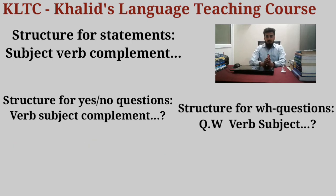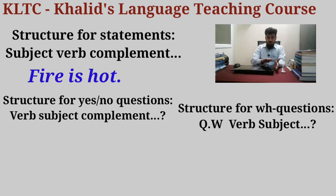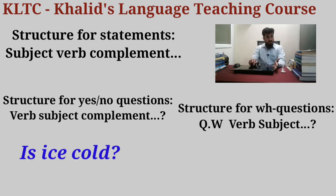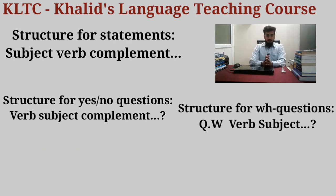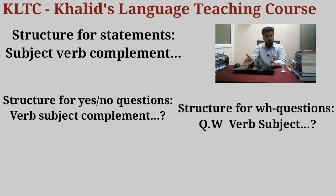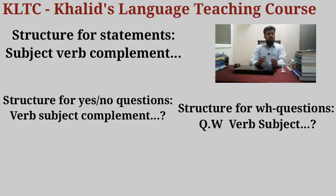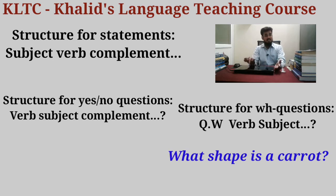More examples: 'Fire is hot.' Yes or no: 'Is fire hot?' 'Ice is cold.' Yes or no: 'Is ice cold?' 'What is ice?' — cold. A tiger is a wild animal, not a domestic animal. So the WH question: 'What kind of animal is a tiger?' For carrot — what shape is a carrot? WH question: 'What shape is a carrot?'